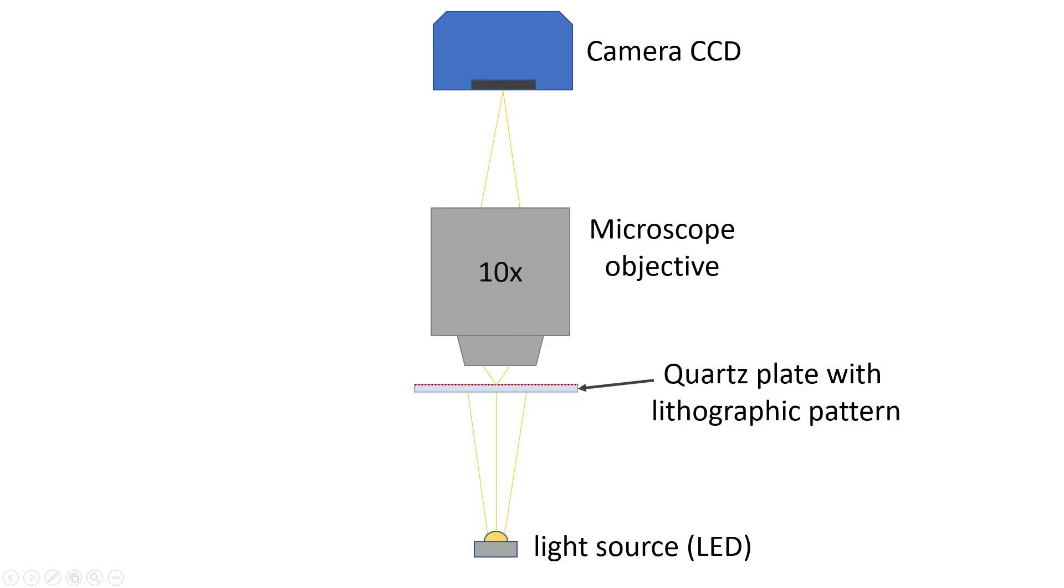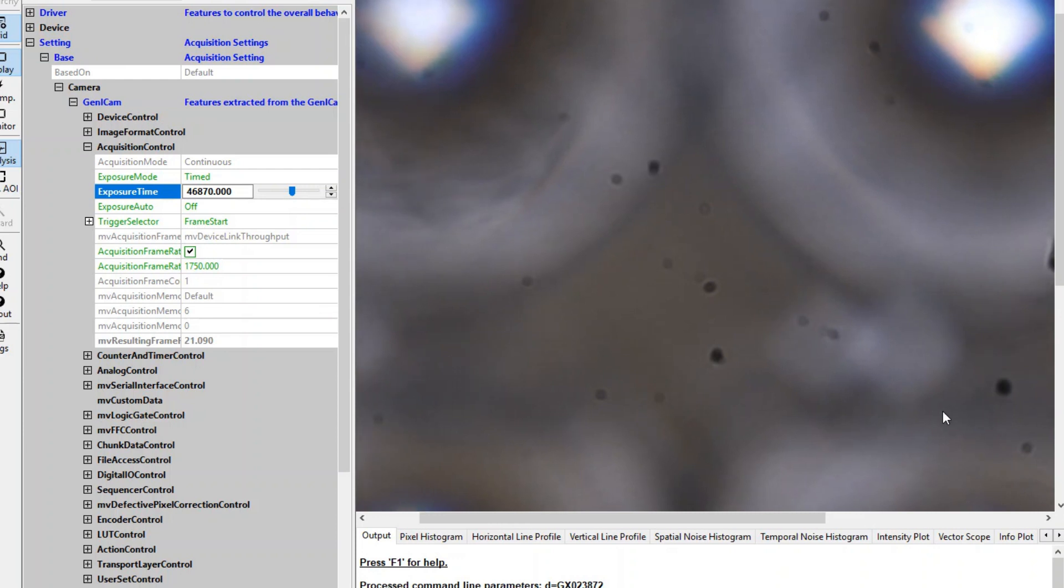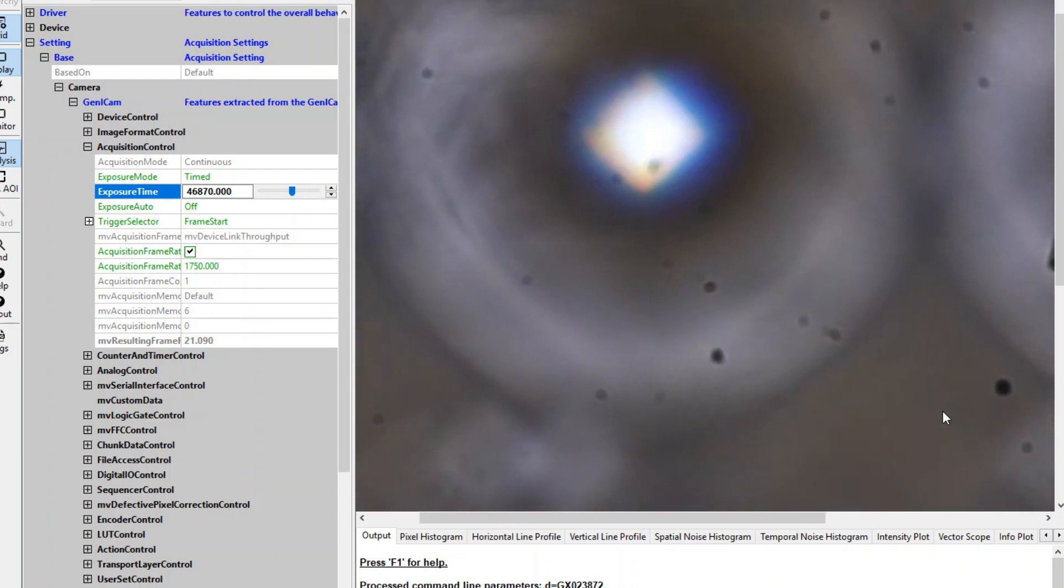Now here is the schematic of the configuration that I used to look at them. The illumination source is a white LED and it is a few centimeters below the sample which contains the lens pattern. And from above, I examine the results using a microscope equipped with a CCD camera. Let me show you what I saw when I looked at these patterns for the first time.